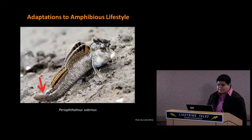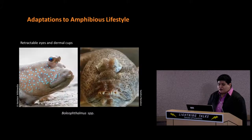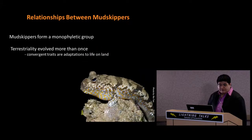Many of the characters used previously are really adaptations to an amphibious lifestyle which helped group these terrestrial mudskippers together — such as thickening of rays in the caudal and pectoral fins, the arrangement of bones and muscles within the pectoral fins, and retractable eyes. Many of these amphibious mudskippers also have a dermal cup, which holds water so that the mudskipper can moisten its eyes while on the mudflats.